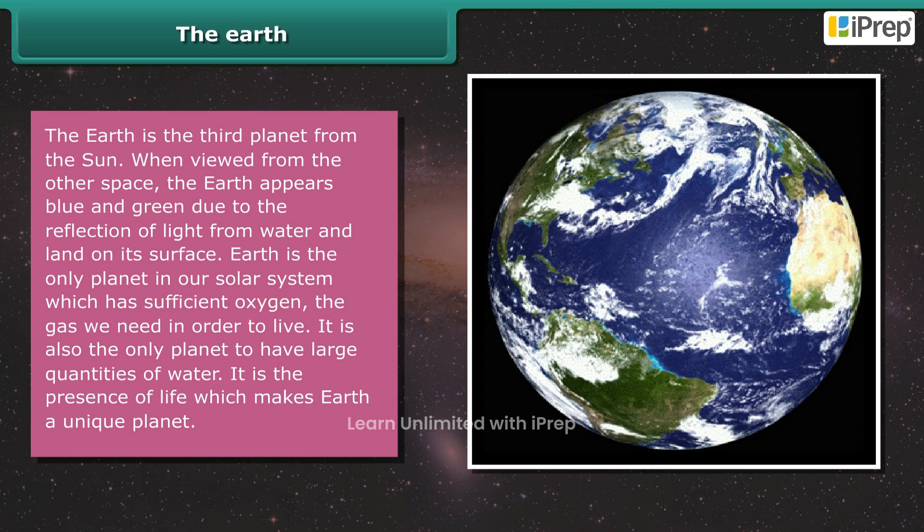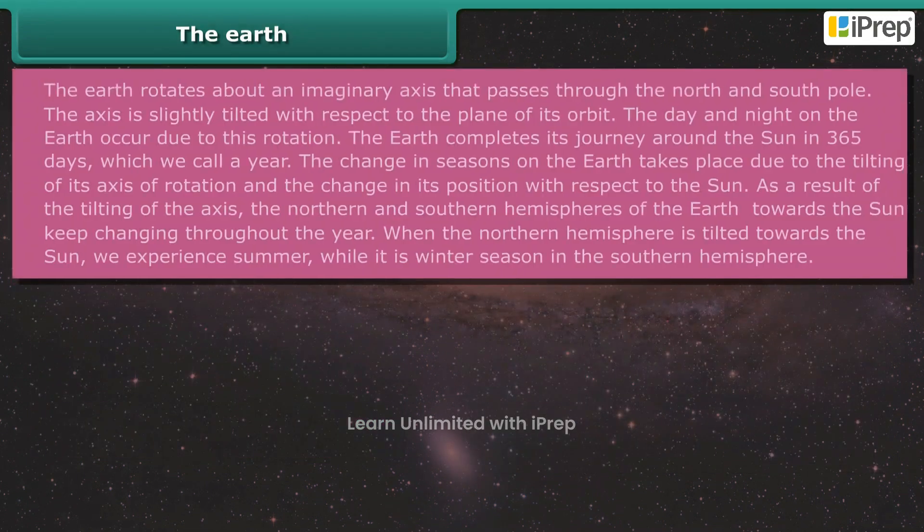Earth is the only planet in our solar system which has sufficient oxygen, the gas we need in order to live. It is also the only planet to have large quantities of water. It is the presence of life which makes Earth a unique planet.